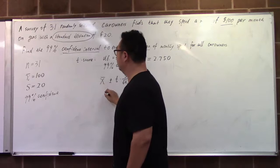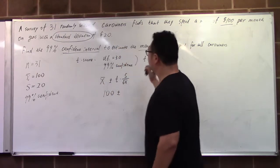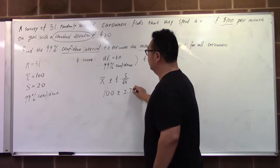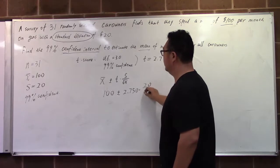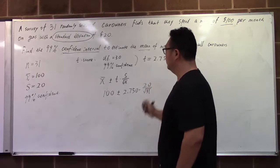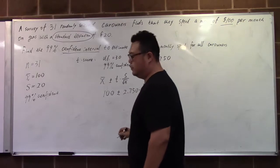Sample mean is $100. The t-score is 2.750. Standard deviation is 20 divided by the square root of 31. Multiplying and dividing these, we get 9.88.